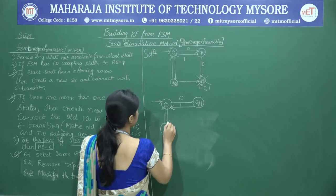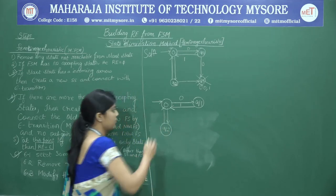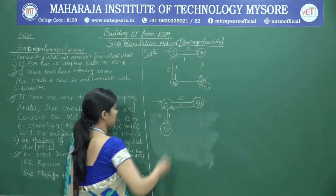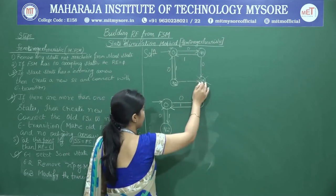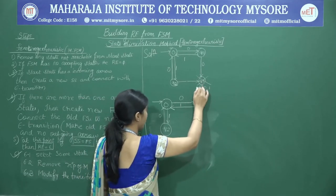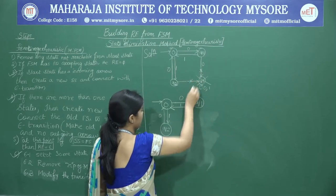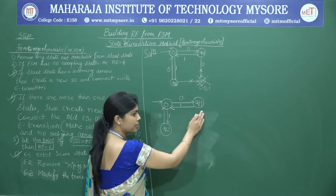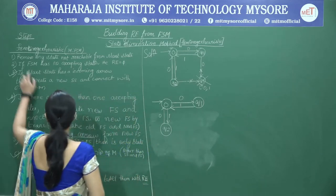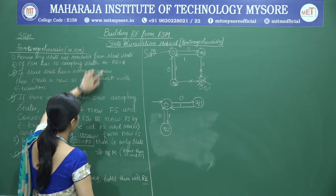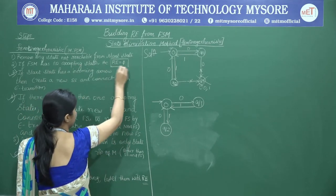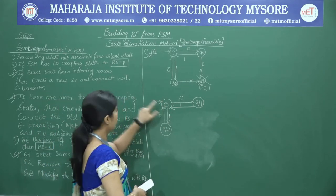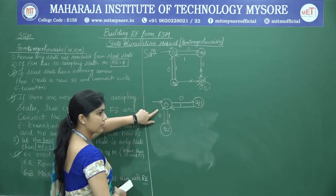After eliminating Q3, this is what the automata looks like. We then go to step 2: if the FSM has no accepting states, the regular expression is null. That is not true here because we have at least one final state, so step 2 does not apply to this problem.